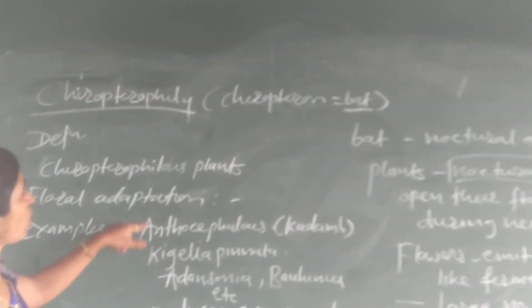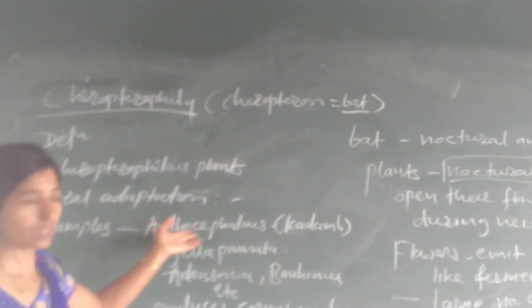Examples of chiropterophilous plants include Anthocephalus, Kigelia pinnata, Adansonia, and Bauhinia.